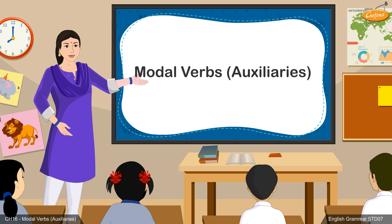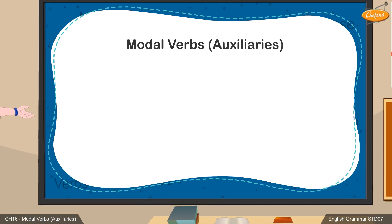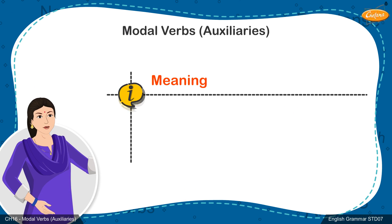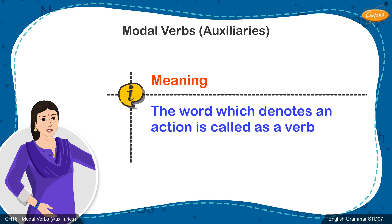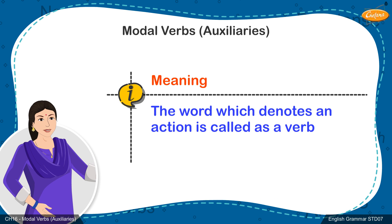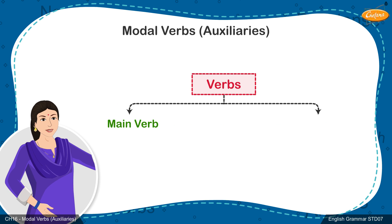Friends, today we shall learn about modal verbs, auxiliaries. The word which denotes an action is called a verb, which is of two types: main verb and auxiliary or helping verb.